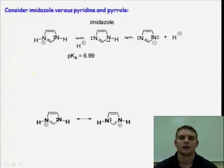In this webcast, we want to continue our discussion of the acid-base properties of different heterocyclic systems. In this first example, we want to compare the acid-base properties of the imidazole structure versus pyridine and pyrrole.